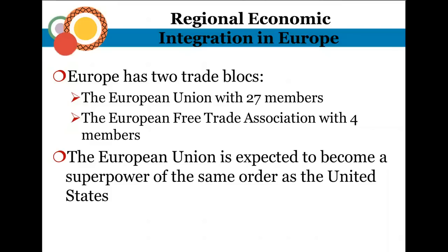Europe has two trade blocks: the European Union with 27 members and the European Free Trade Association with four members. The European Union is expected to become a superpower at the same economic level as the United States and China, if they can work through their current economic stumbling blocks and move closer to a political union.